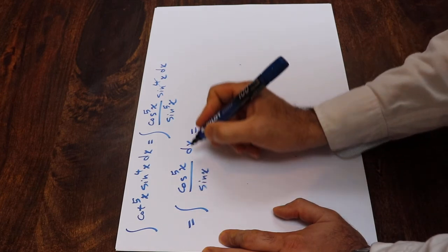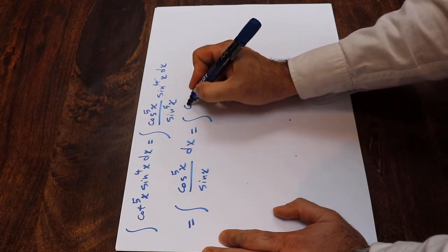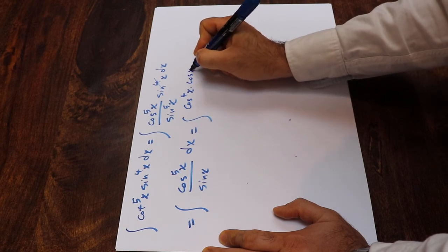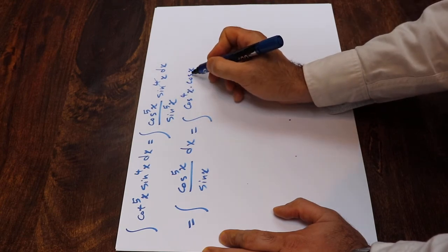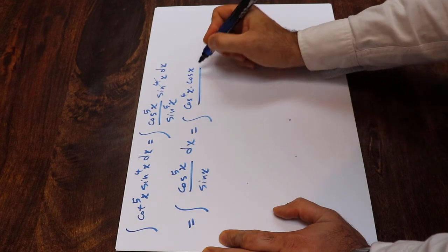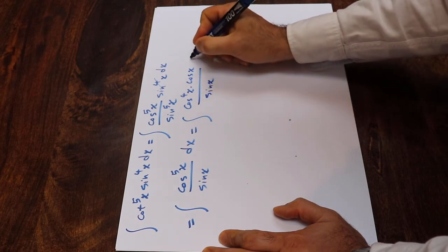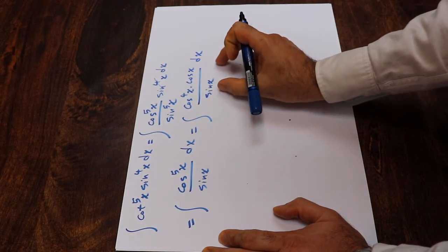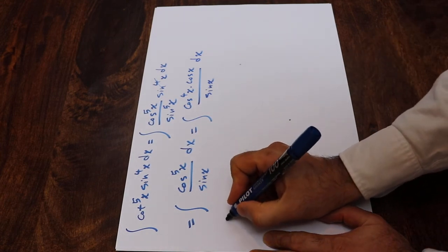This integral, you can rewrite as the integral of cosine 4x times cosine x, since cosine 4x times cosine x equals cosine 5x, giving us cosine 5x divided by sin x dx. You can solve it using the substitution rule.